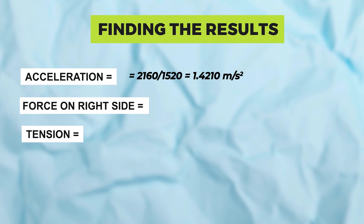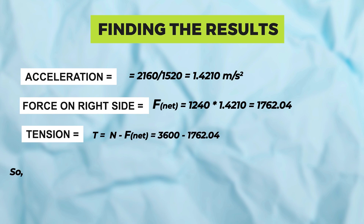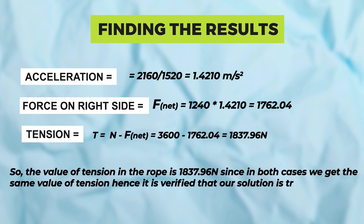Acceleration equals 2160 over 1520, giving 1.4210 m/s². Force on the right side: F_net equals 1240 times 1.4210, so total force on the right side is 1762.04 N. Tension T equals N minus F_net, where N is 3600 and F_net is 1762.04, so total tension is 1837.96 N. The value of tension in the rope is 1837.9 N. Since in both cases we get the same value of tension, it is verified that our solution is correct.